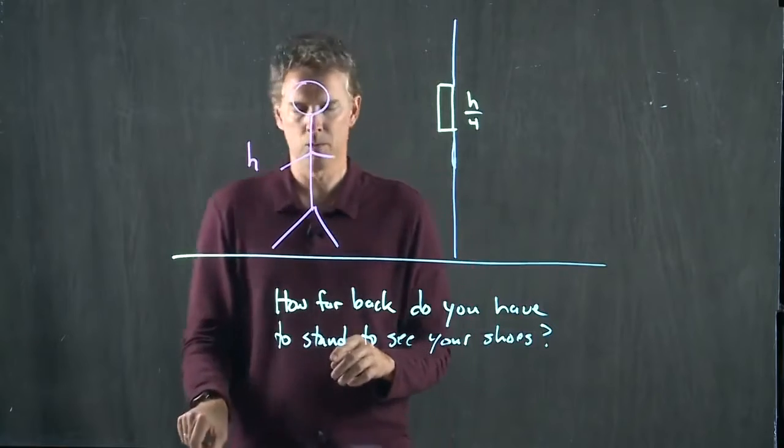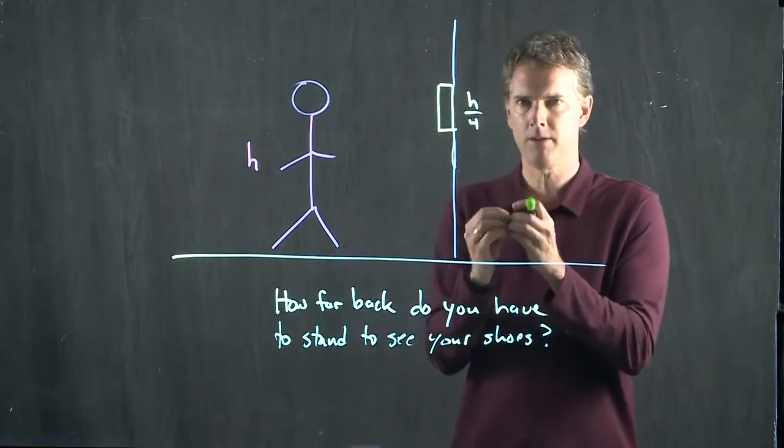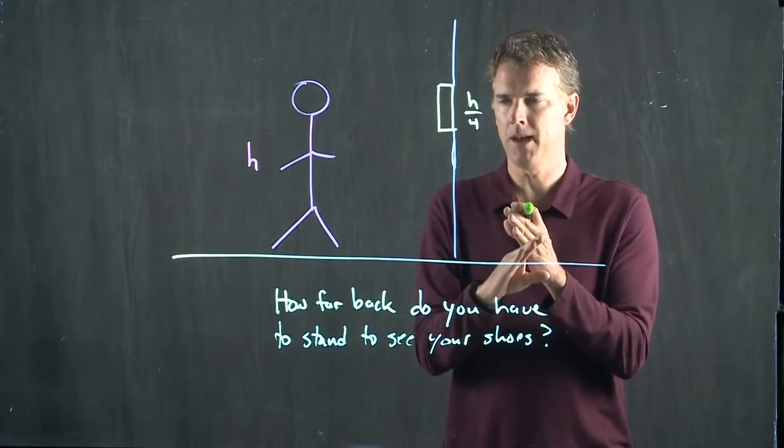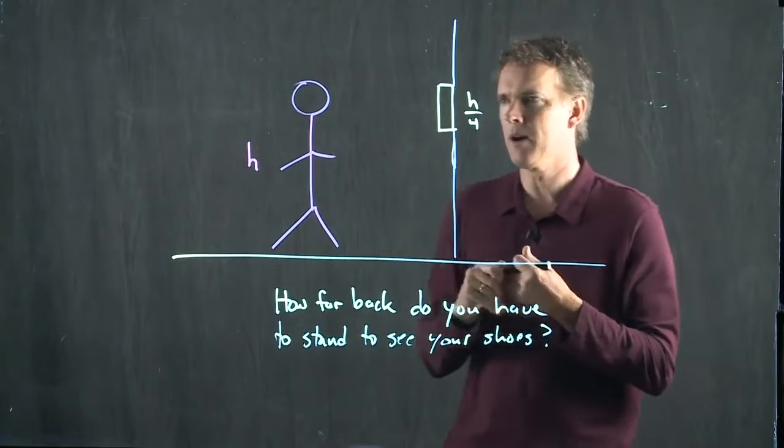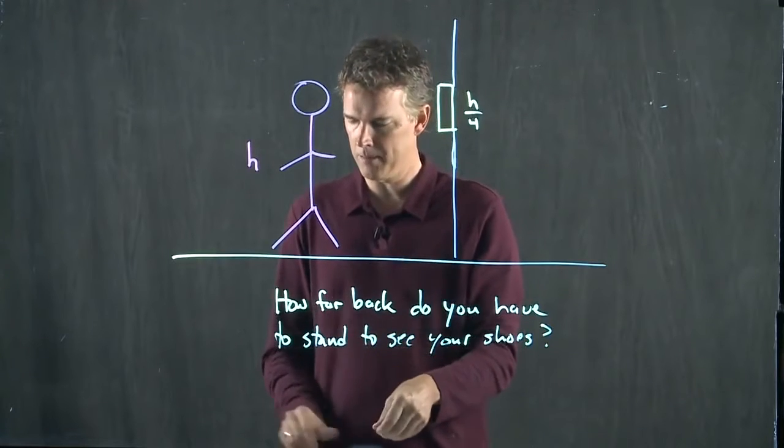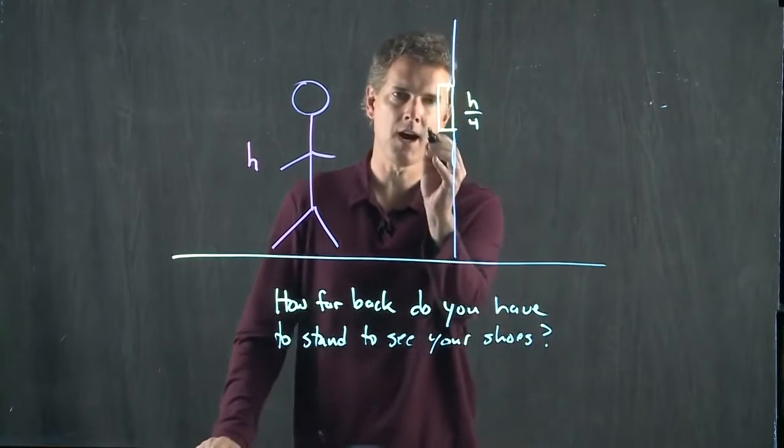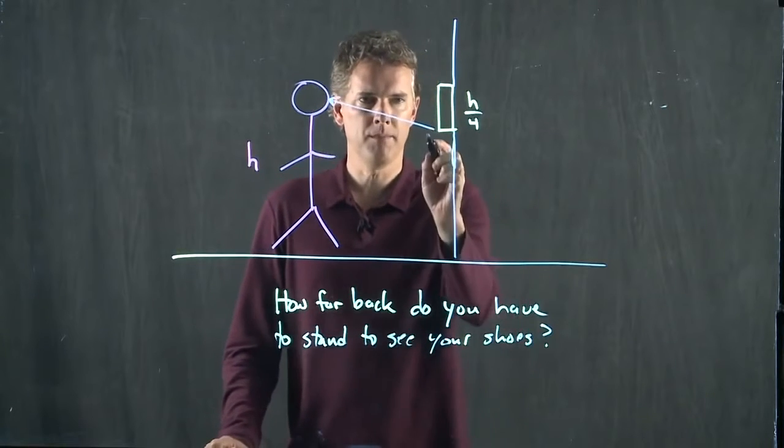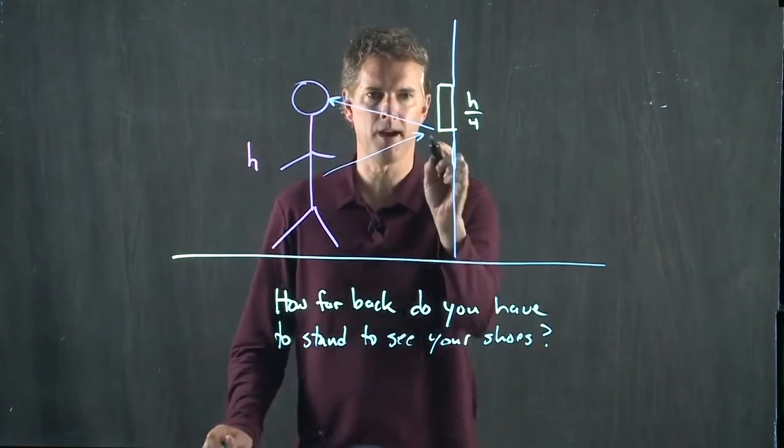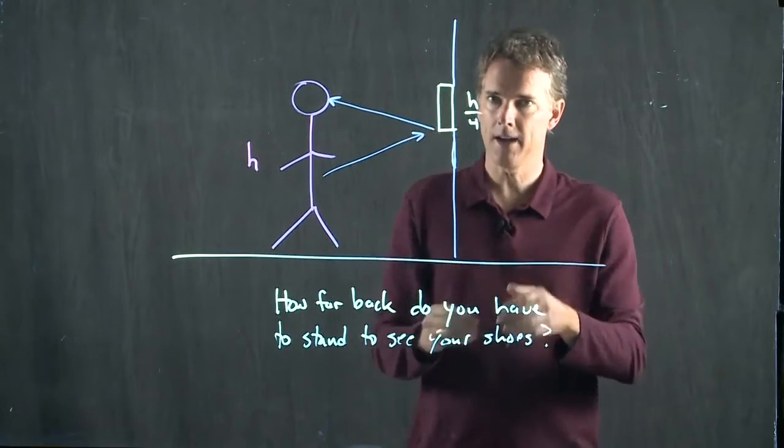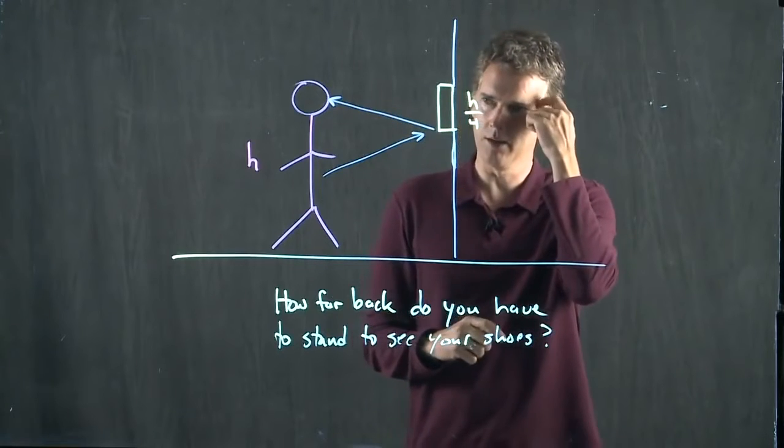What we said was that rays that bounce off a mirror bounce off the exact same angle they came in at. So if we think about the bottom of this mirror and a ray going from the bottom of the mirror to the person's eye, where did it come from? It had to come from about there. Incoming angle has to equal reflected angle.